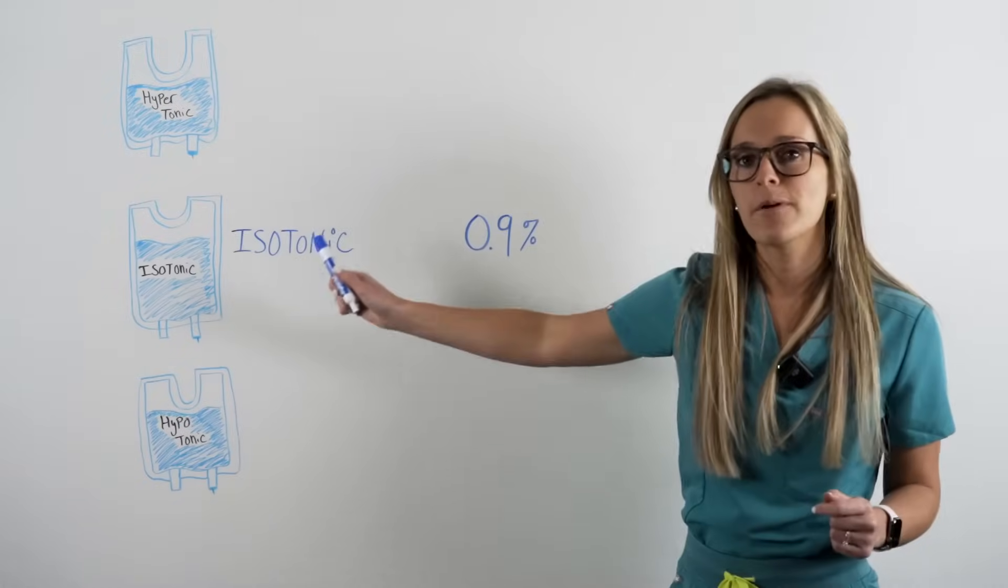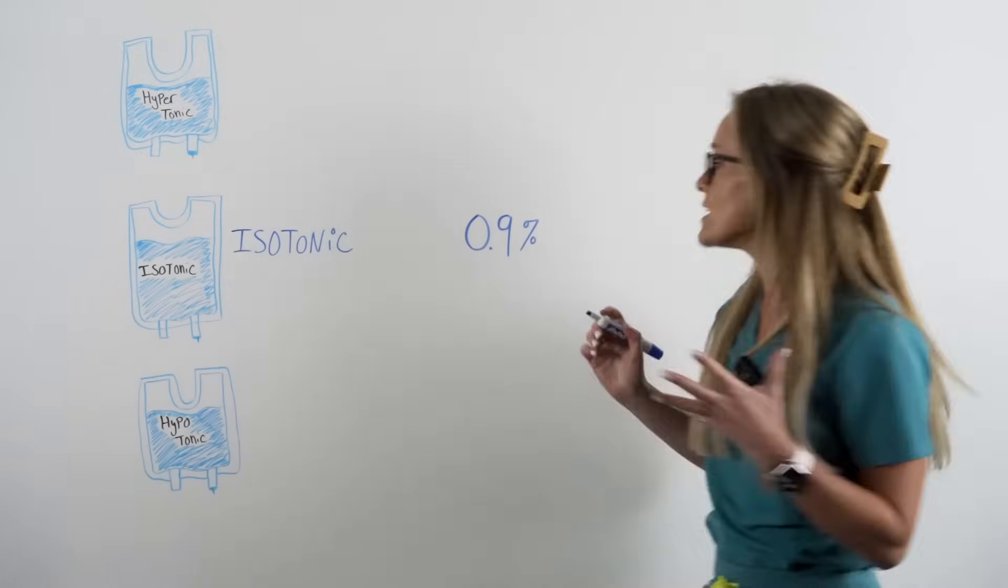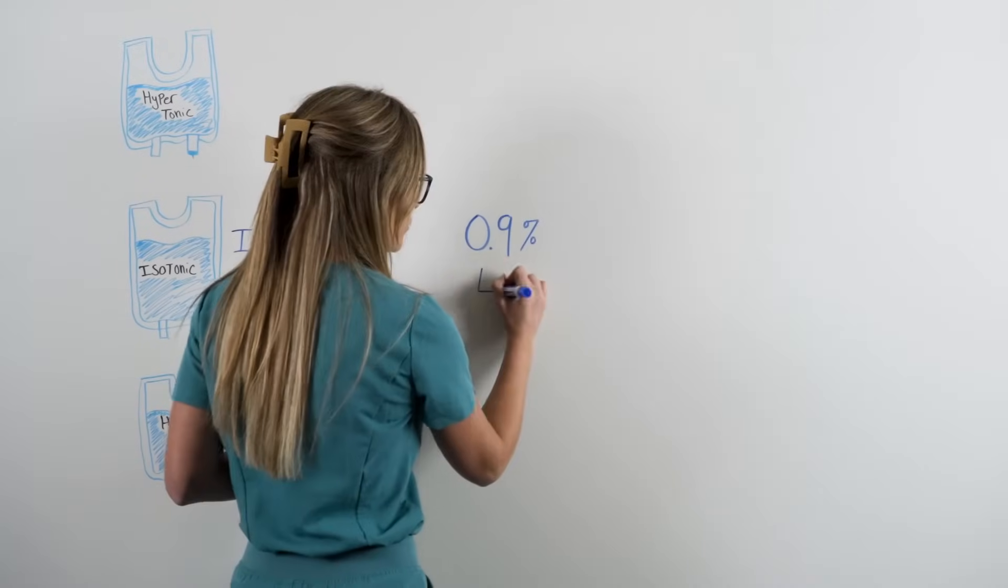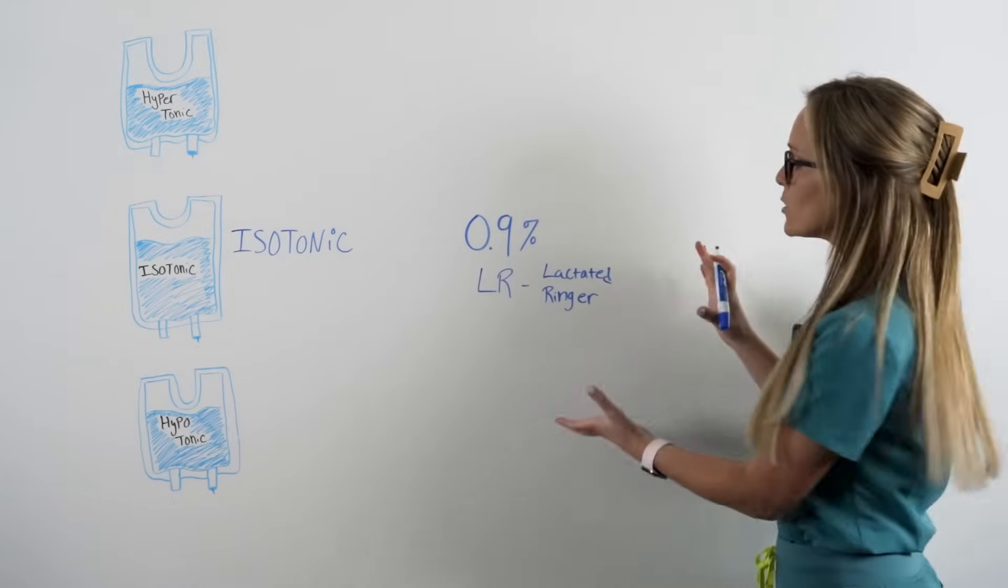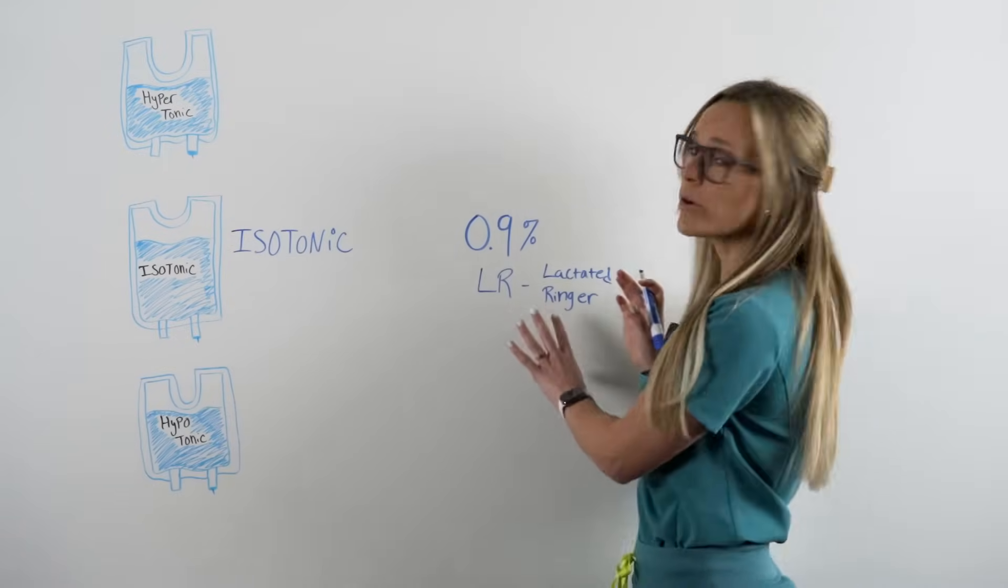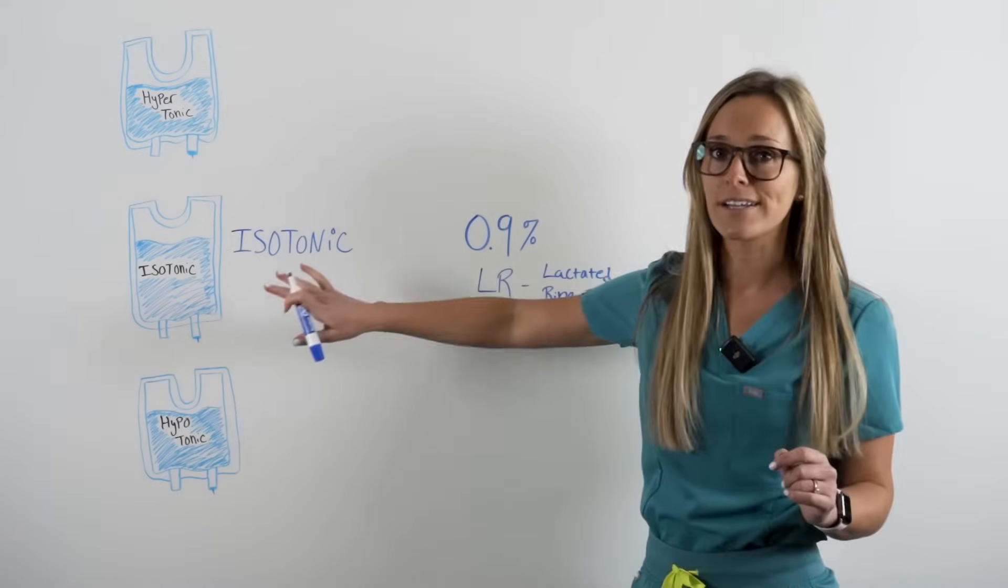Just a side note, there is another type of isotonic solution called LR or lactated ringer. This doesn't fall into our memory trick because it doesn't have a number, but I still want you to recognize that LR or lactated ringer is an isotonic solution.